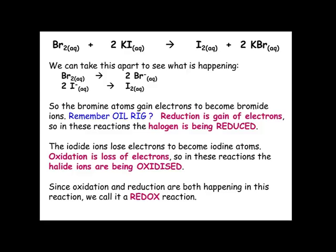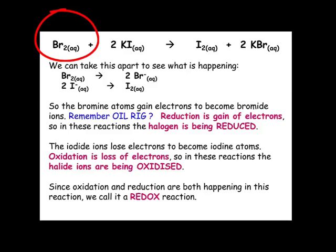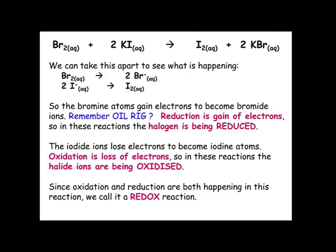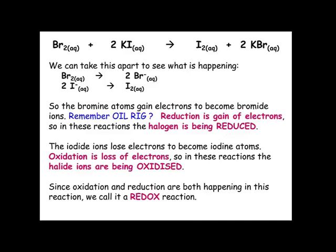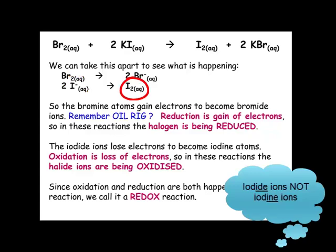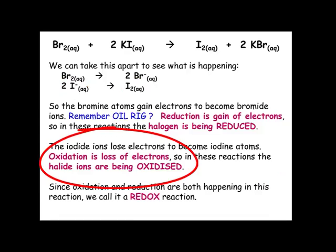These reactions are examples of redox reactions — redox being reduction and oxidation reactions happening simultaneously. Looking more closely at the reaction of bromine water with potassium iodide: iodine is formed in solution and we also form potassium bromide. To remind ourselves what reduction and oxidation mean, we use the term OIL RIG — oxidation is loss, reduction is gain of electrons. In this reaction, the bromine atoms gain electrons to become bromide ions — they are gaining electrons, so using RIG, the halogen is being reduced. The iodide ions are losing electrons to become iodine atoms — they are losing electrons, so using OIL, they are being oxidised.